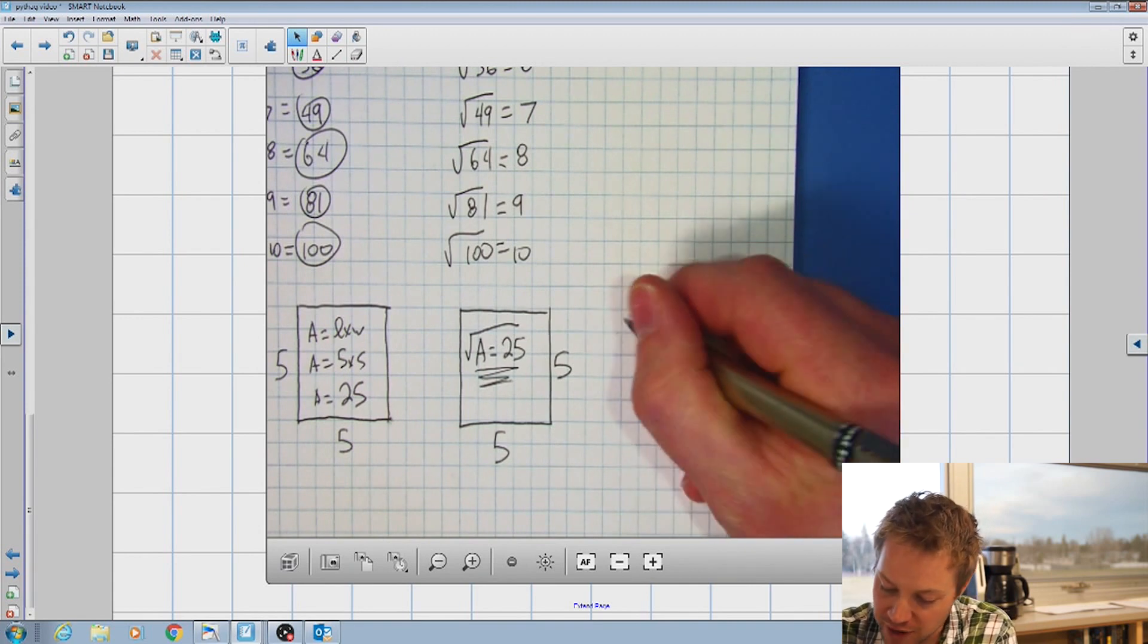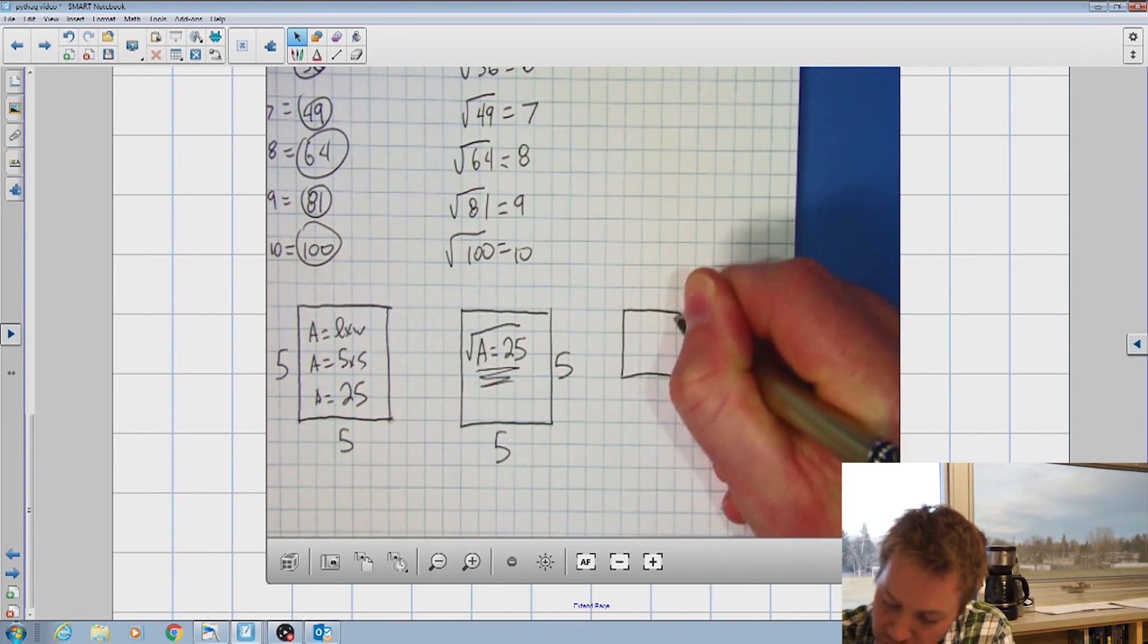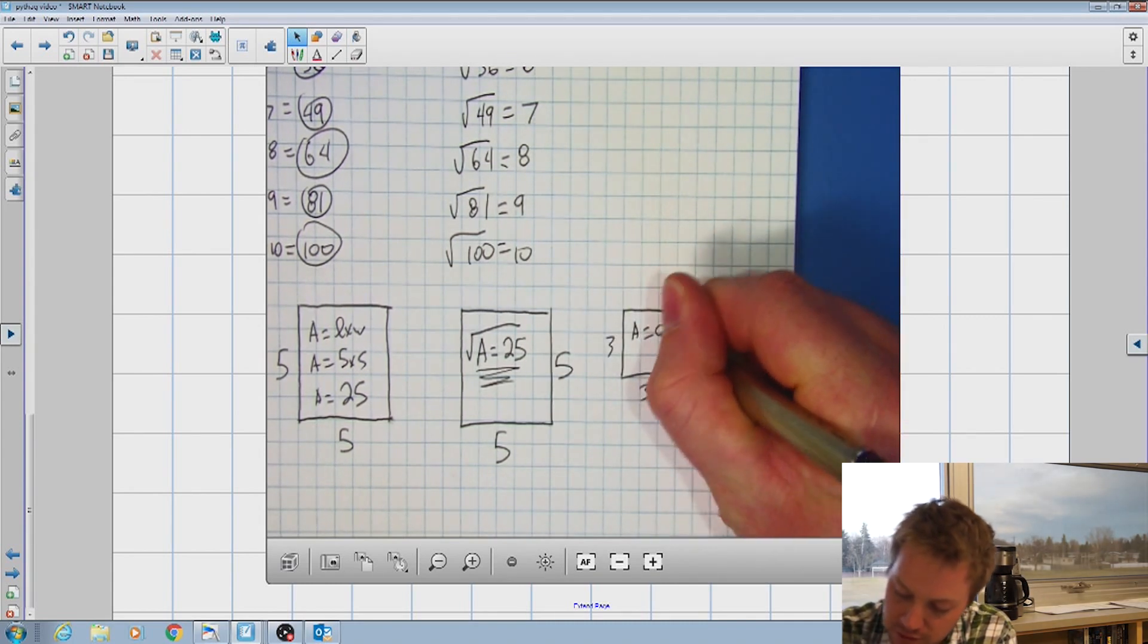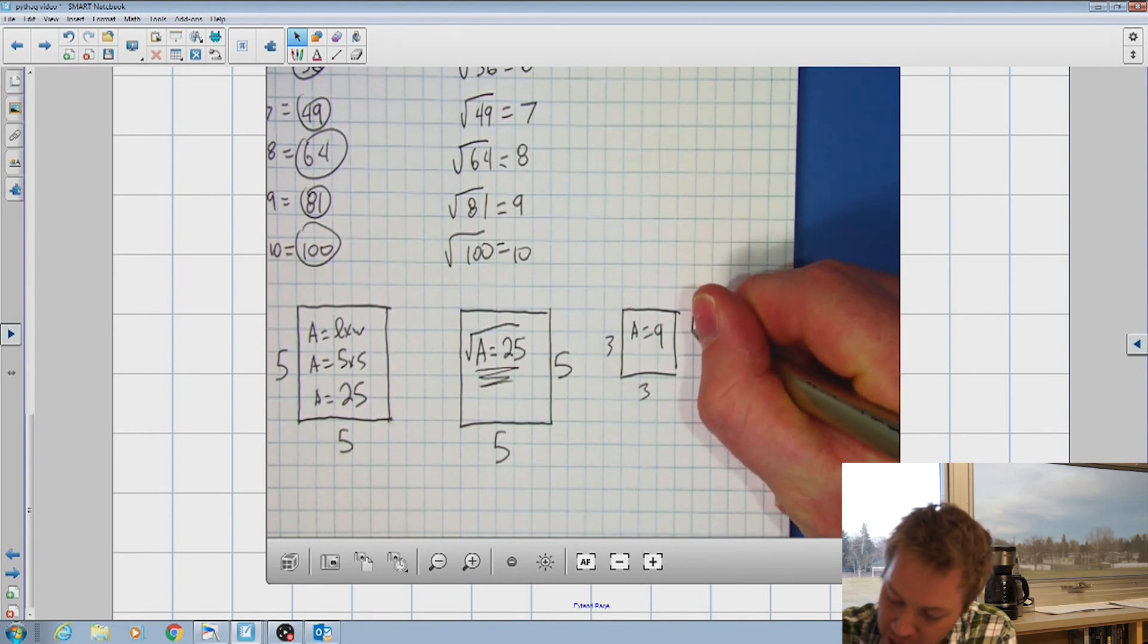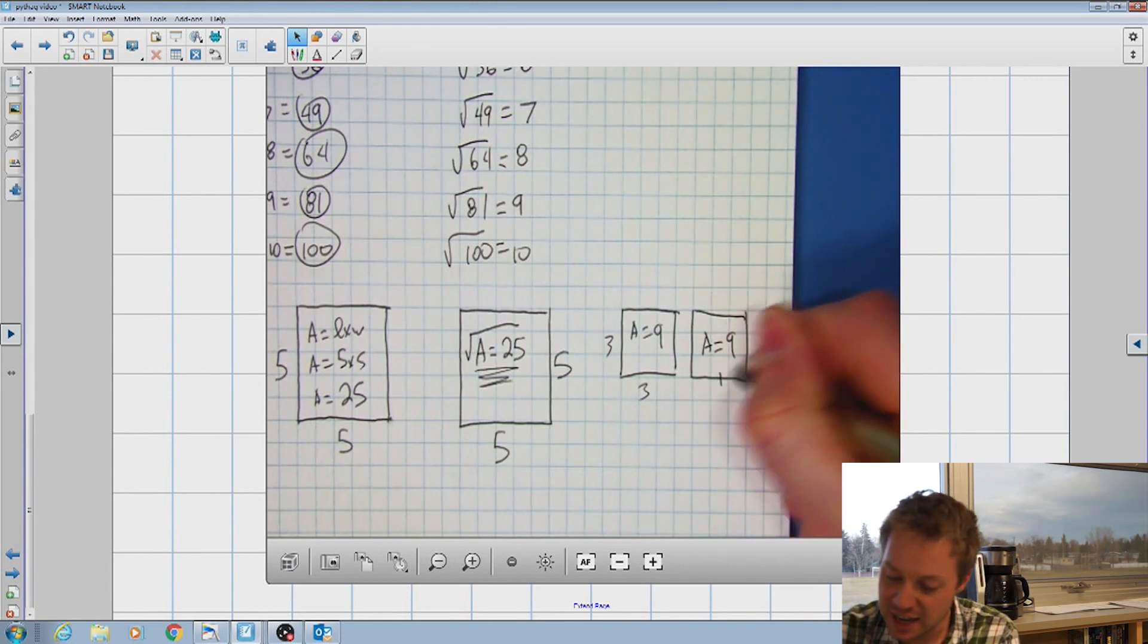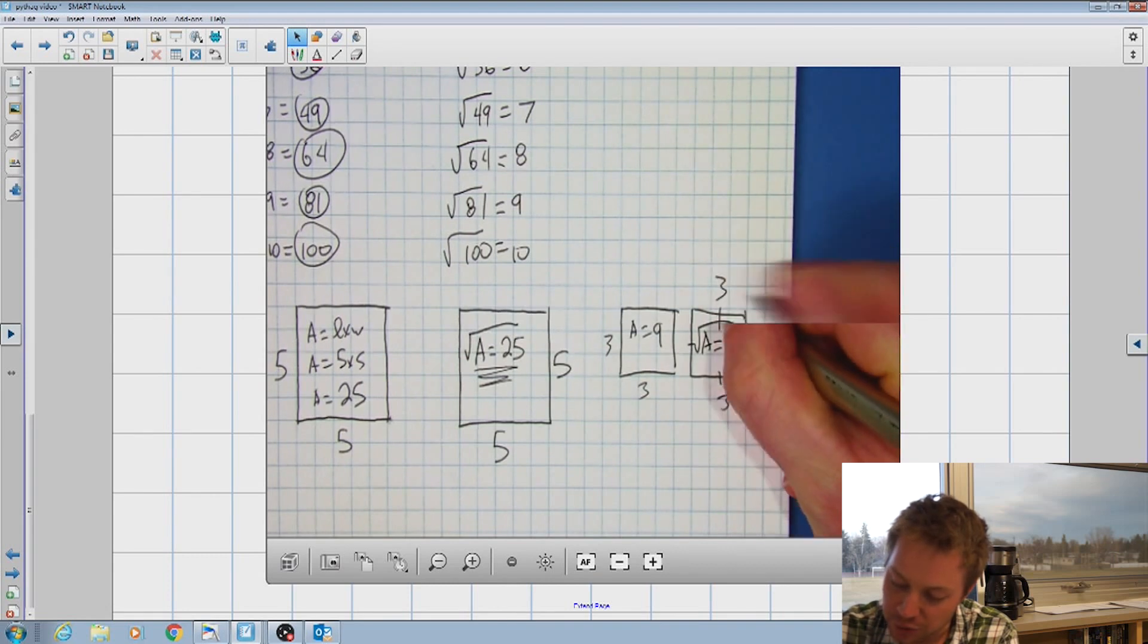So let's do another example here. What if I had another one that was three by three? So I know that area equals three times three. And I can also work backwards. If I've been given that same square with an area of nine, to find the side lengths of that square, I simply take the square root of nine, and I wind up with three.